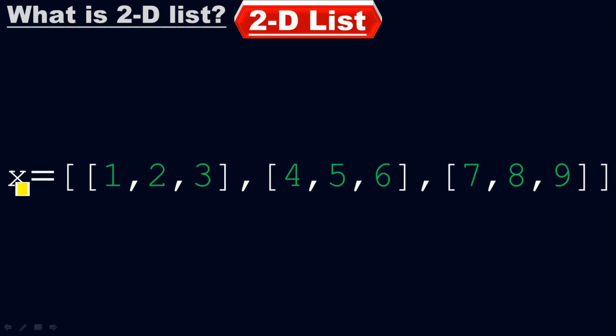Whenever you want to access this information, you need to call x. It is the identifier, the identification, the tag, the label for this whole expression. And that is the reason we call it the two-dimensional list.